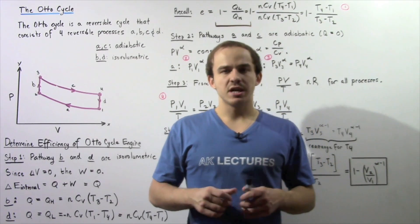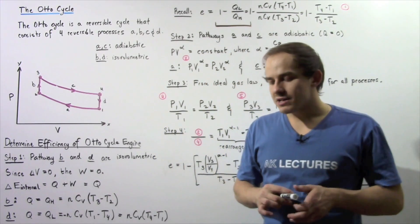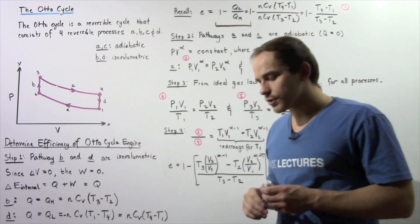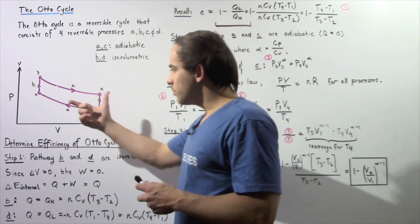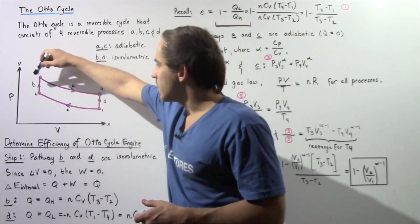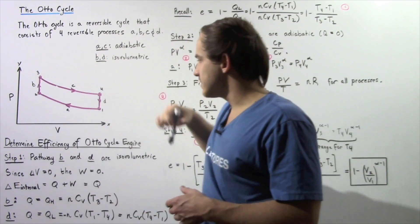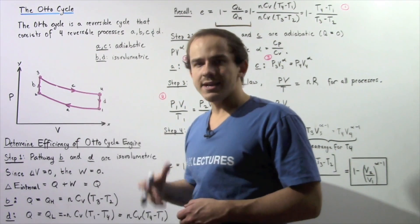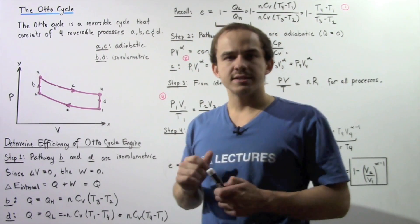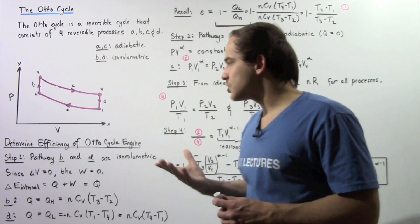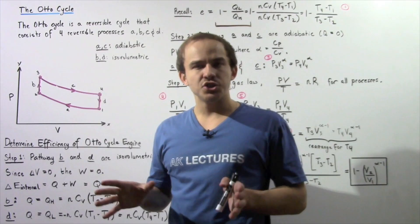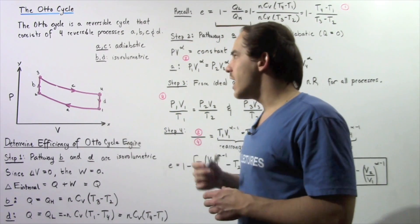Let's continue our discussion on the Otto cycle. Recall that the Otto cycle is essentially a reversible cycle that consists of four reversible processes. These processes are shown in the following diagram: process A, process B, process C, and process D. Processes A and C are adiabatic processes, while processes B and D are isovolumetric. In this lecture, our goal will be to determine the equation for the efficiency of an engine that uses the Otto cycle.